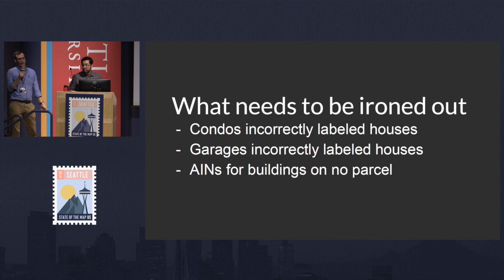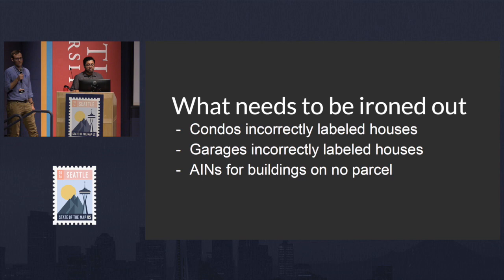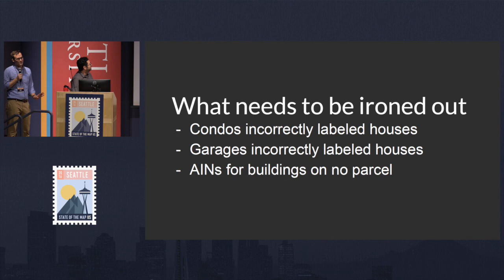There are some things that need to be ironed out. We have to clean up this import — I don't think it'll be that much work, we've done a lot on the get-go. But certain things have been pointed out by the community and on the listserv. Condos were incorrectly labeled as houses. Garages are incorrectly labeled as houses as well. And there are AINs for parcels with no buildings — for instance, there was a lifeguard stand on the beach labeled as heavy industrial. We have to clean that up, but they're small issues.